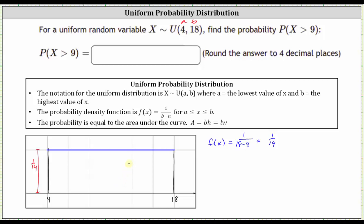And now let's find the probability that X is greater than nine. Let's say nine is approximately here. The probability that X is greater than nine is equal to the area under the probability density function from nine to 18, or to the right of nine, which should be this area here.